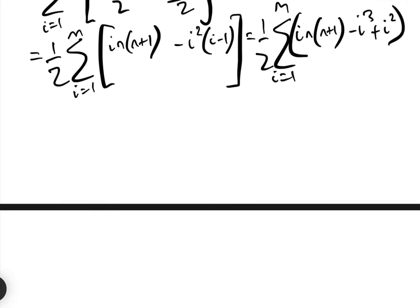This term is just the sum of i times a constant, this is the sum of i cubed, and this is the sum of i squared. The sum of the first m square numbers is a known formula. And as a quick aside, the sum of the first m cube numbers is equal to the square of the sum of the first m natural numbers — that's a useful fact.